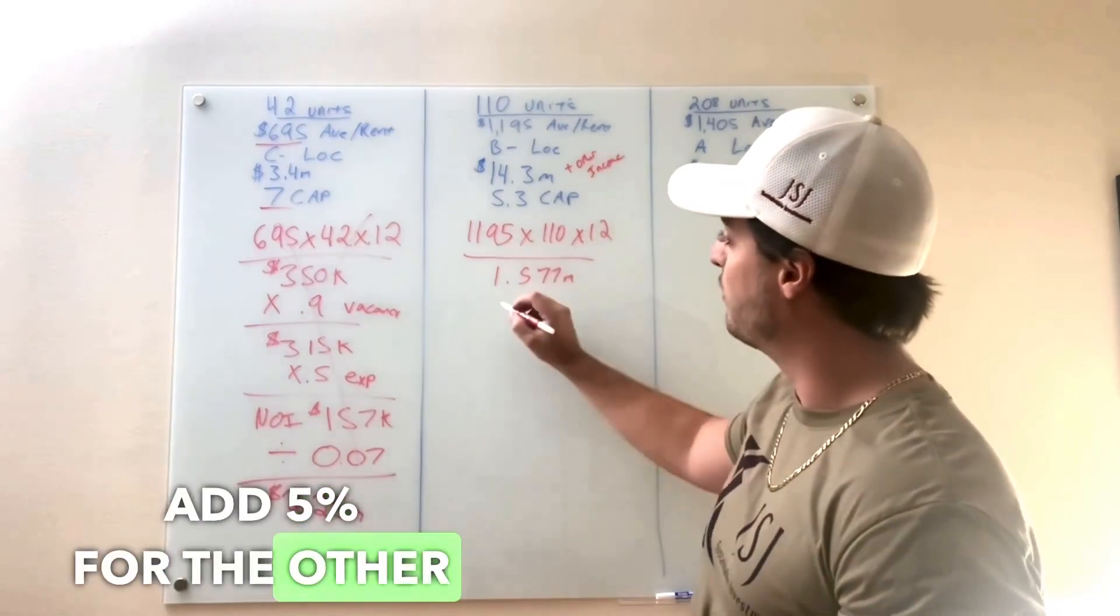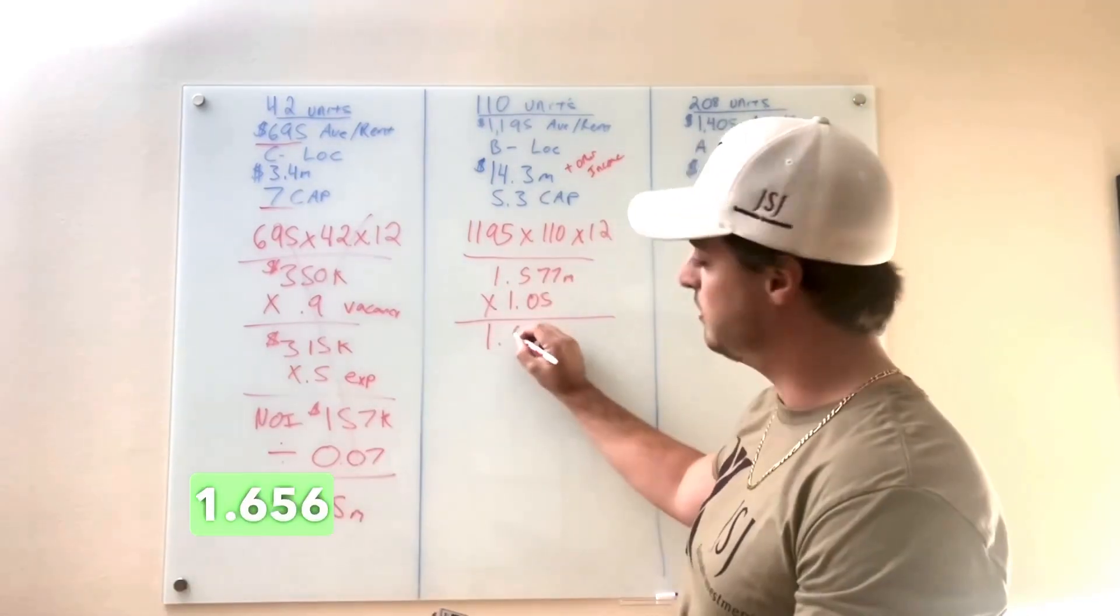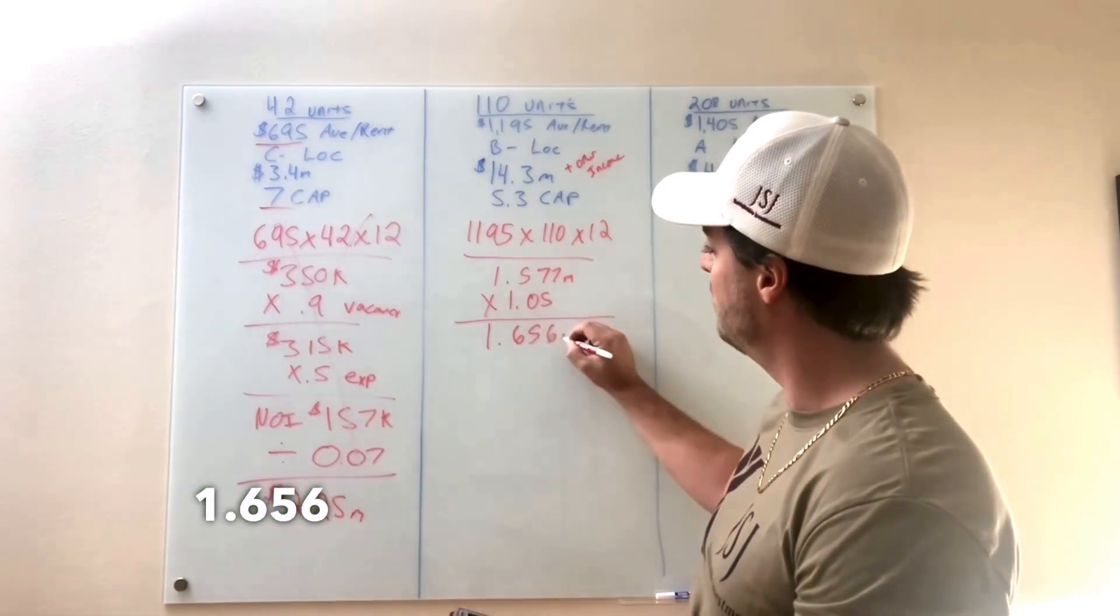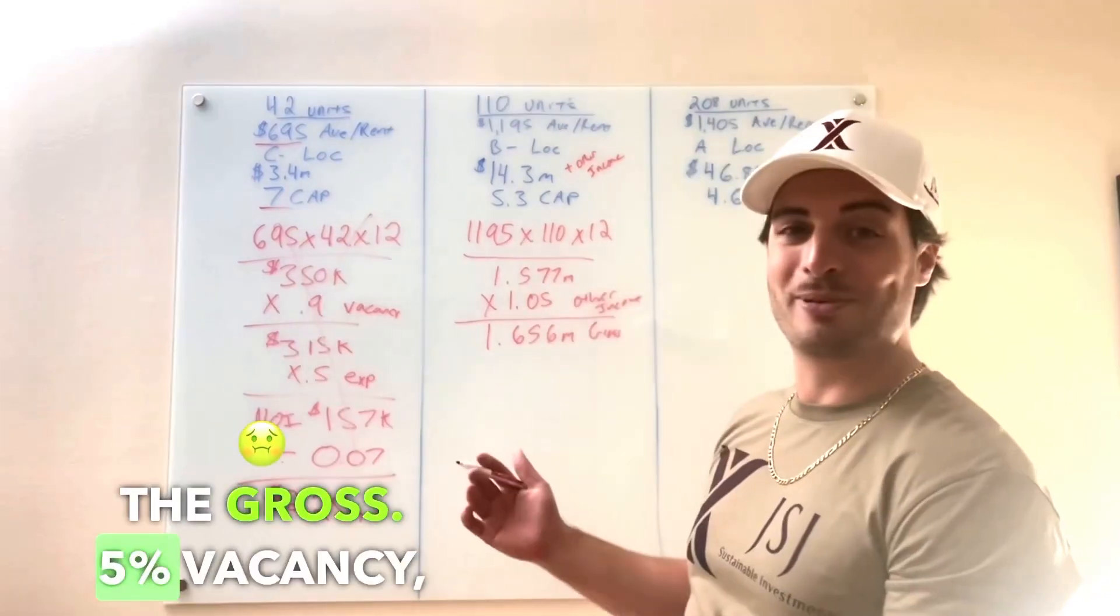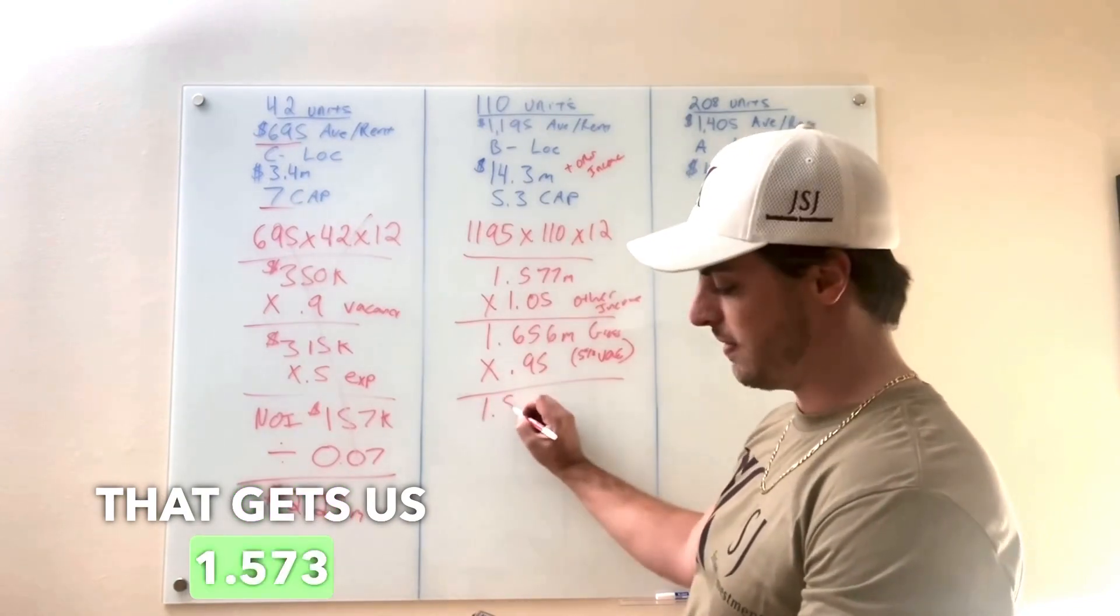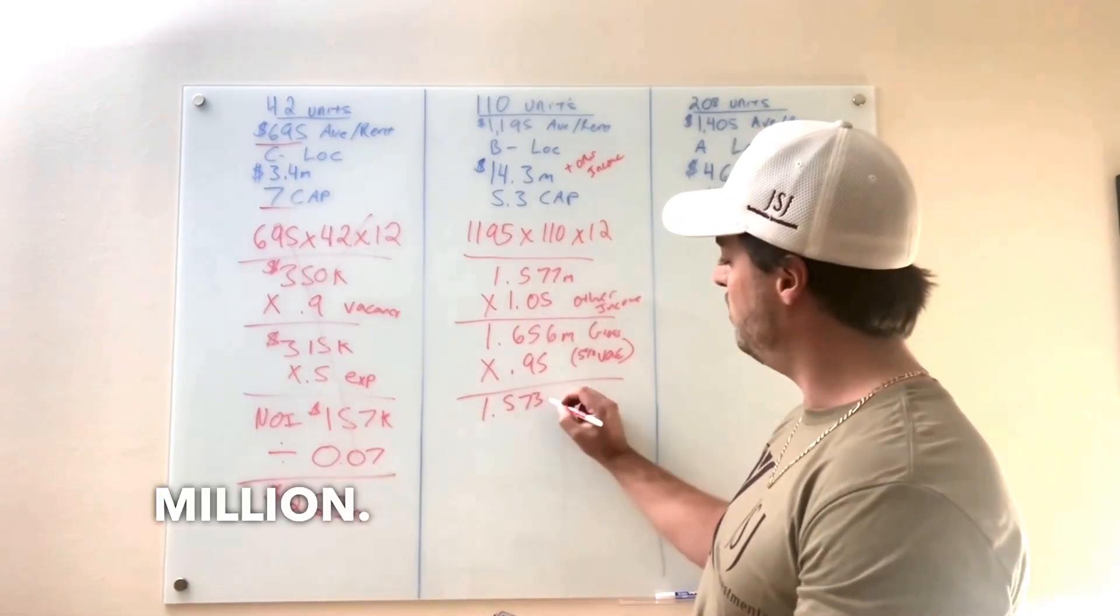We're going to add 5% for the other income. Now we're at 1.656 million for the gross. 5% vacancy. That gets us 1.573 million.